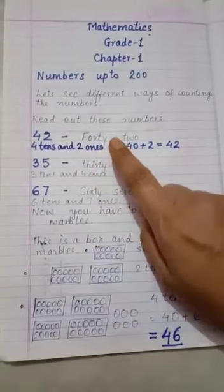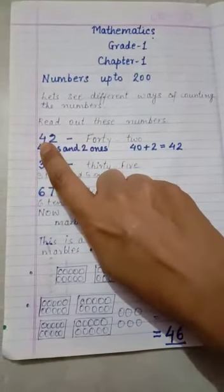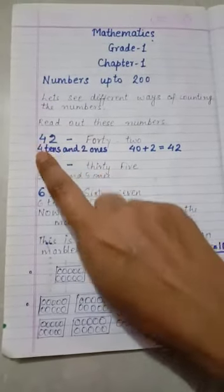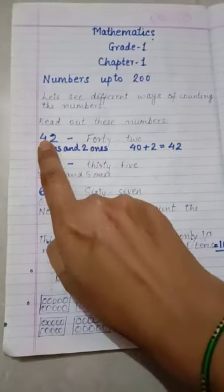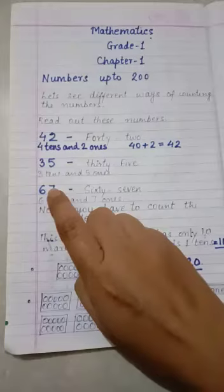Now, once more we will have a look at the place value of the numbers. What is the place value of 4 in 42? The place value of 4 is 4 tens. That is, it is 40. The place value of 4 in 42 is 40.